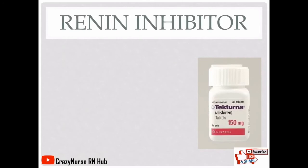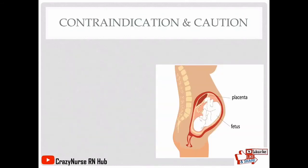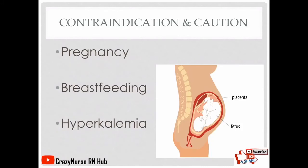Next, we have the renin inhibitor. For example, aliskiren (Tekturna). It is a newer drug classification which inhibits renin, leading to decreased plasma renin activity and inhibiting the conversion of angiotensinogen to angiotensin-1. Contraindications and cautions include pregnancy, breastfeeding, and hyperkalemia — an increased potassium level in the blood.